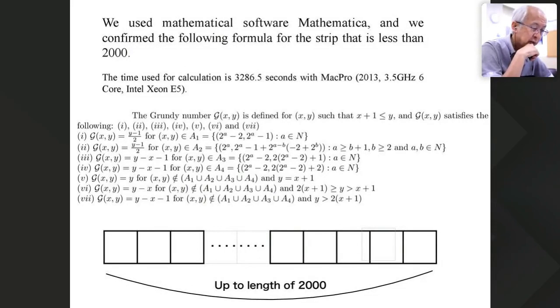Because we have not proved by rigid mathematics. But we confirm the conjecture by computer calculation. For example, in our case, when the strip of papers up to 2000, we calculate by computer and confirm the formula. So this is a typical experimental mathematics method.